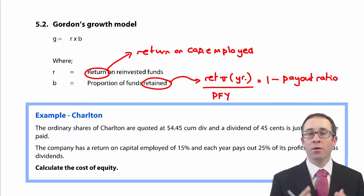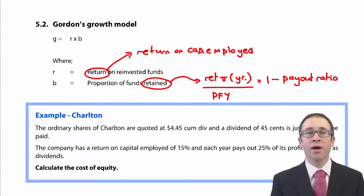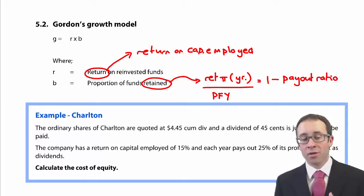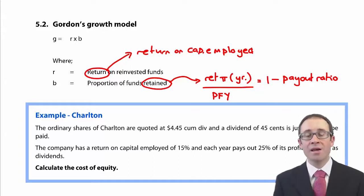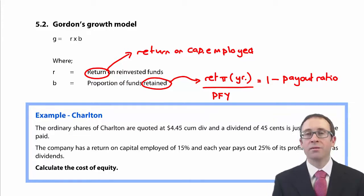You need to work out your growth based on Gordon's growth model, which takes a return figure R, multiplied by a retention figure B. You may be asked to calculate the retention figure, and if they're being really demanding, also ask you to work out your return based on return on capital employed.